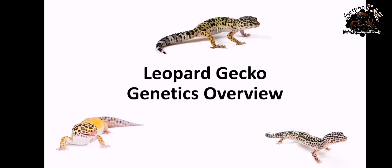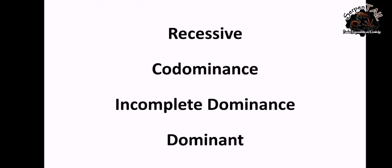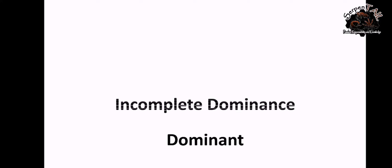So right now, I'm going to explain to you about the leopard gecko genetics overview. This will be a leopard gecko genetics 101. So right now, let's start with recessive, codominance, incomplete dominance, and dominant. So those are the four traits that leopard geckos have. So right now, let's begin with recessive.